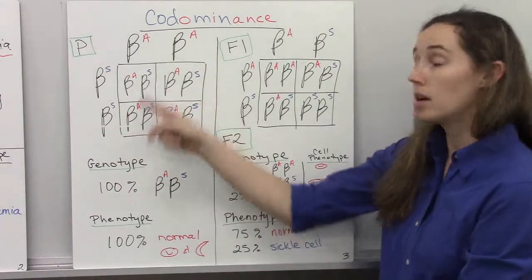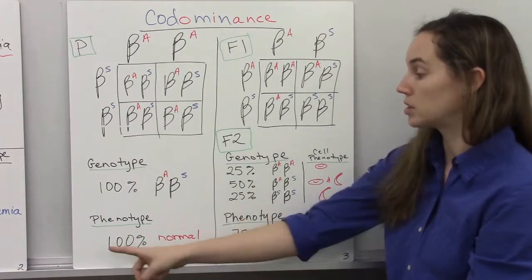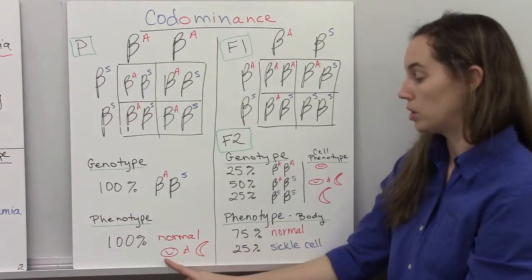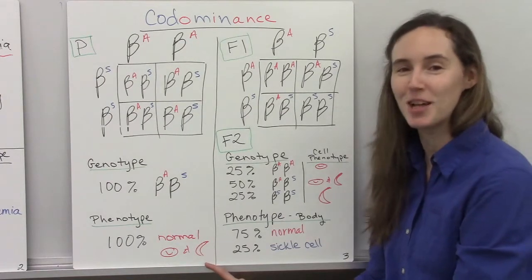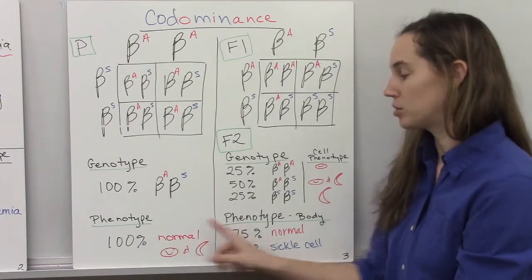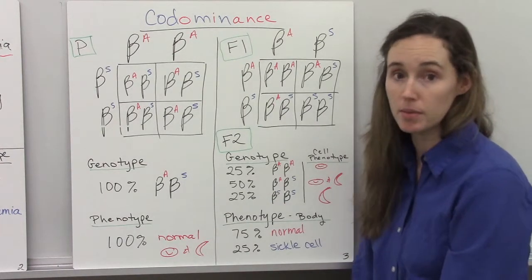100% of their offspring are going to be heterozygous and therefore 100% of their offspring will make both normal and sickle shaped cells. And they will show the normal body phenotype having no symptoms of sickle cell anemia.